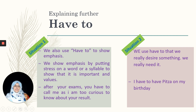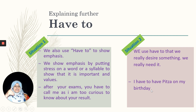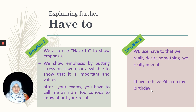Second situation: we use 'have to' when we really desire something, when we really need something. For example: I have to have pizza on my birthday. Here 'have to' is showing a deep desire and deep wish for something I want on my birthday.